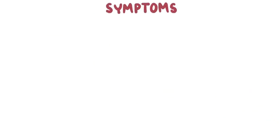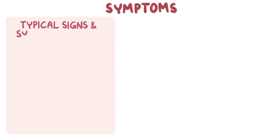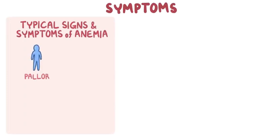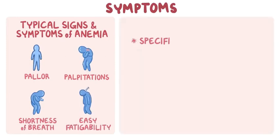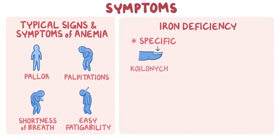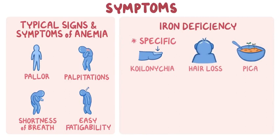Iron deficiency anemia presents with typical signs and symptoms of anemia, like pallor, palpitations, shortness of breath, and easy fatigability. Specific symptoms for iron deficiency include koilonychia, or spooning of nails, hair loss, and pica, which is the consumption of non-food substances like clay or dirt.